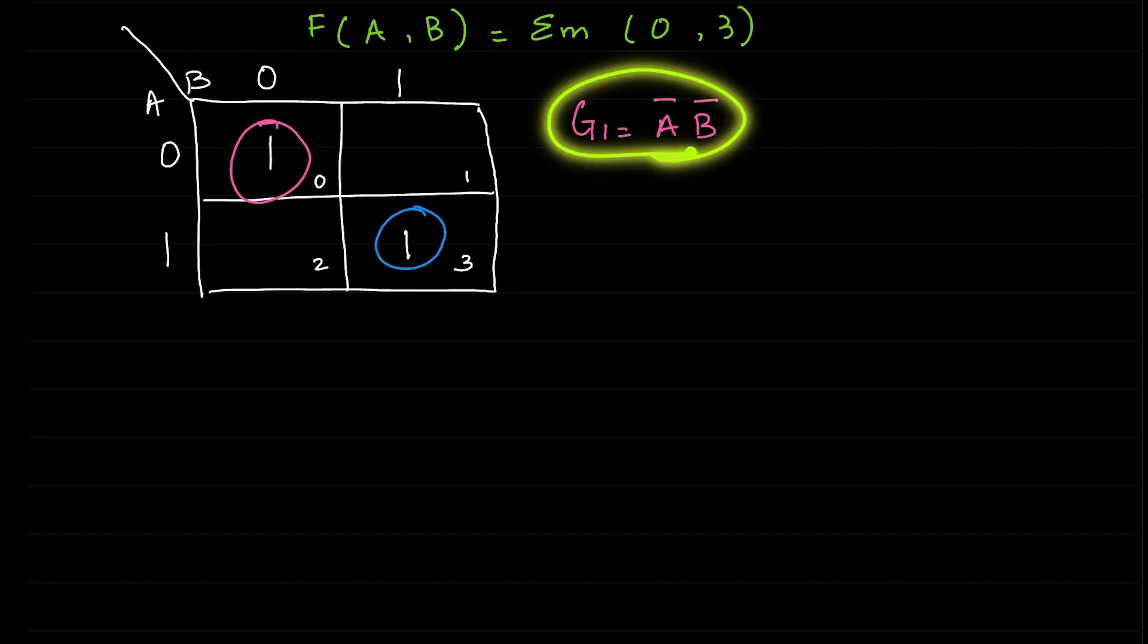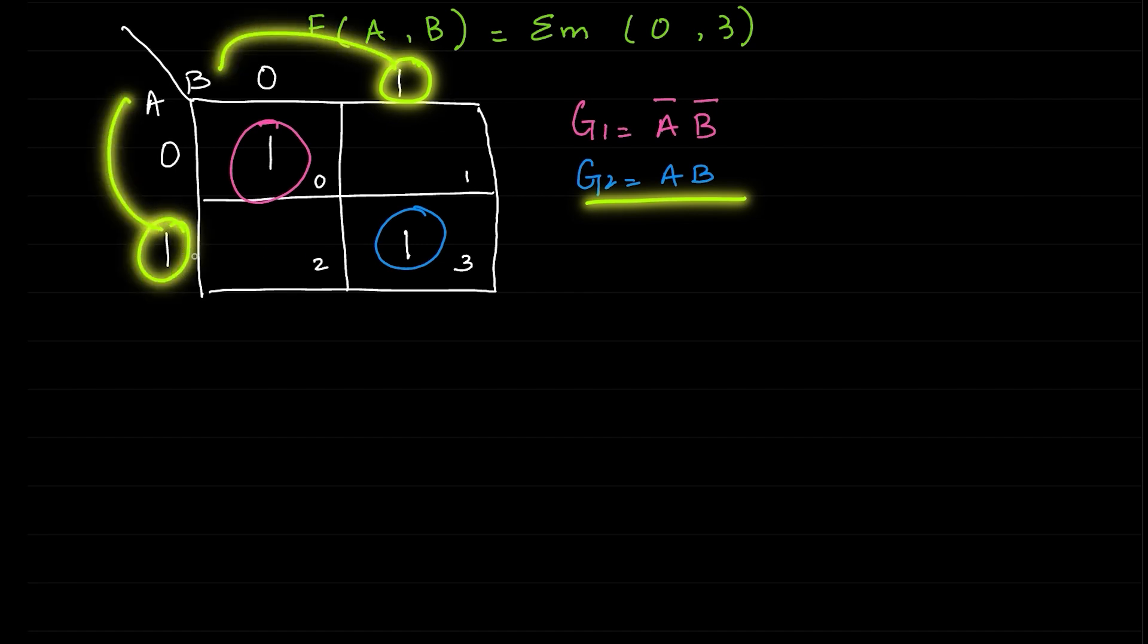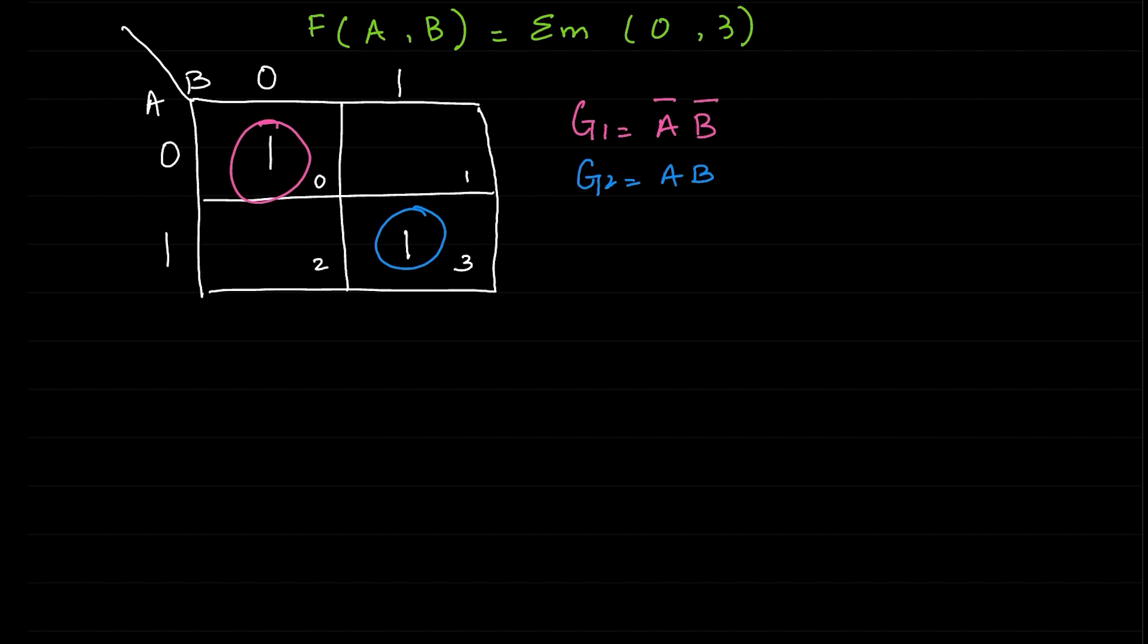Group 2: A and B both are without bar. Without bar means both of the terms are 1. B is 1, A is 1 here as well. And now we will eventually combine the two: A̅B̅ + AB, and this will be the answer for function A, B.